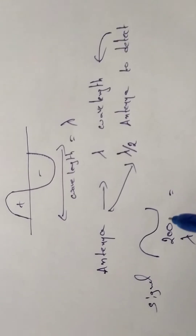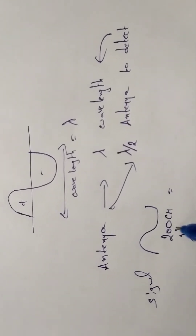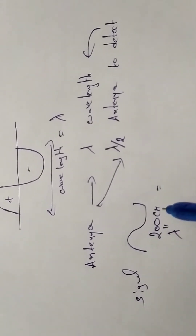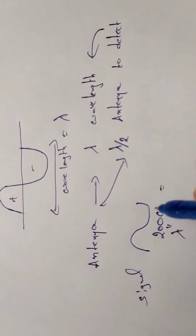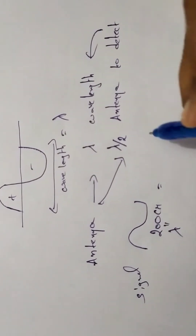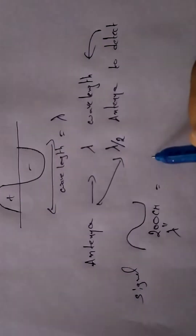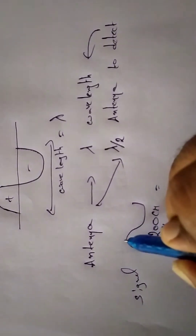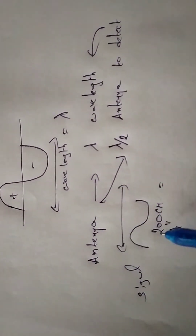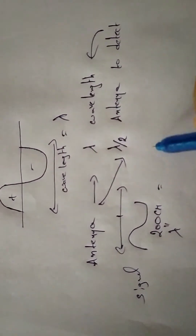For example, if the wavelength is 200 cm, then lambda equals 200 cm, and lambda by 2 gives us 100 cm. So the detection length is 100 cm.